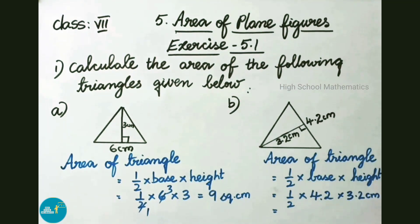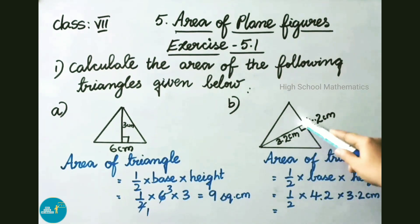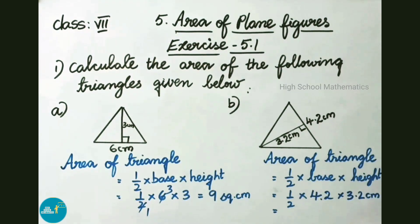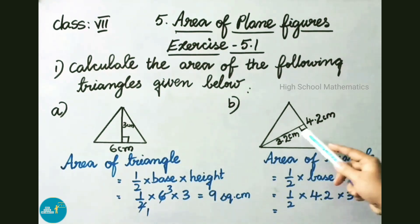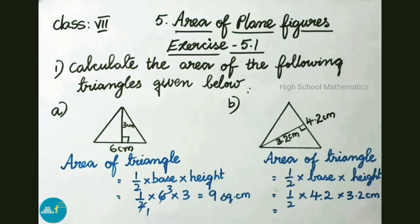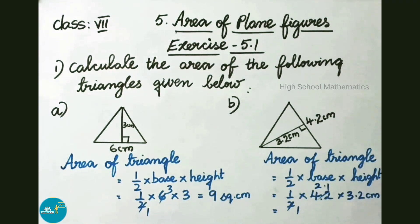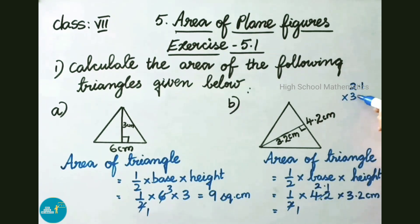See now the second figure. Here in this triangle, the base is 4.2 cm and the height is 3.2 cm. Area of triangle equals to half into base into height, that is half into 4.2 cm into 3.2 cm. That gives us 2.1 times 4.2. Now we multiply 2.1 and 3.2 — forget about the decimal and just multiply normally.